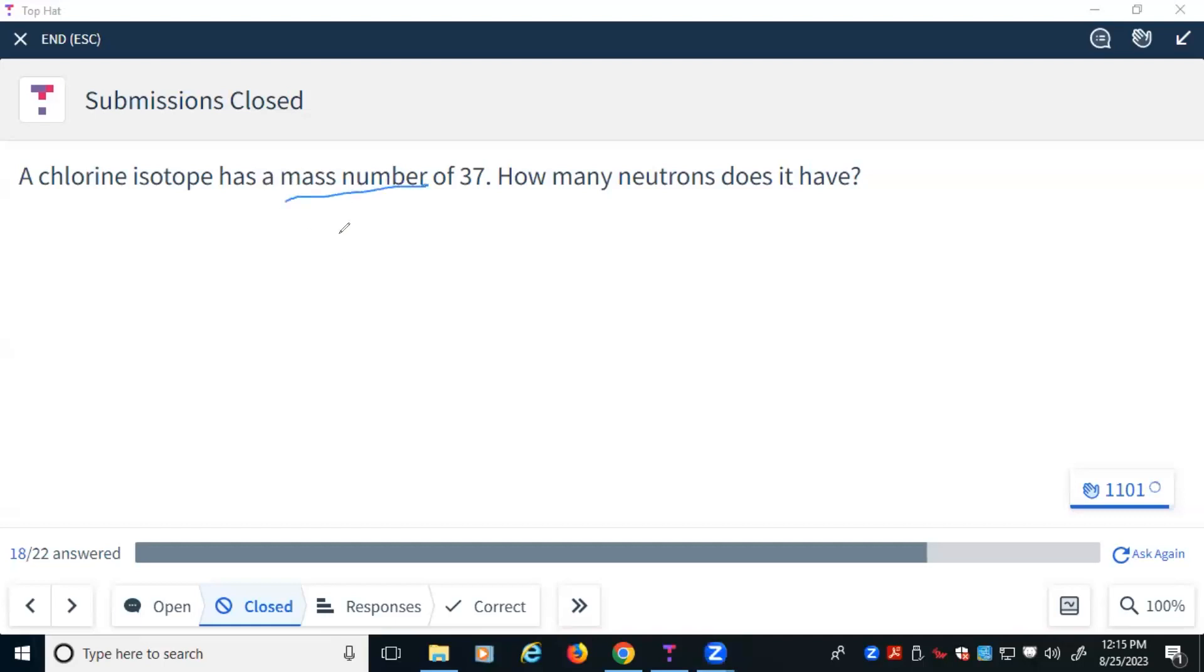Well, remember, mass number is protons plus neutrons. The fact that it is chlorine will tell us, okay, well that's Cl, number 17. So it has 17 protons. So 17 protons plus the number of neutrons has to equal 37.